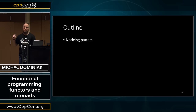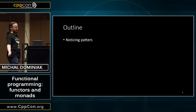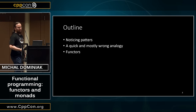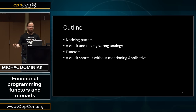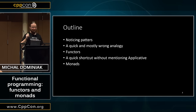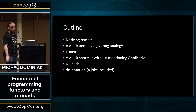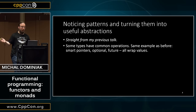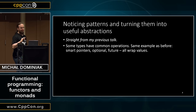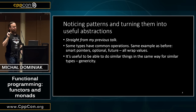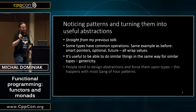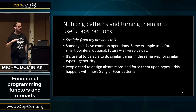So I am going to say something about noticing patterns, and there will be a mostly wrong analogy for functors. We will go for functors, take a quick path without mentioning something, we will talk about monads, and I will tell you something about the do notation. So some types have common operations and it's useful to be able to do those common operations the same way for those types.